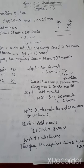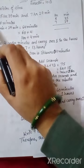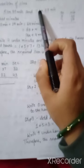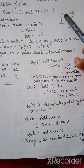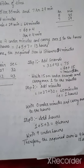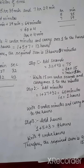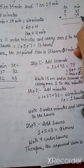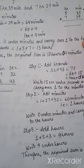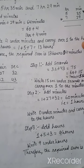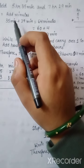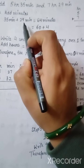First of all, we have this example: 5 hours 35 minutes and 7 hours 29 minutes. You have to write it in columns — 5 hours 35 minutes and 7 hours 29 minutes. The first step is to add minutes first.